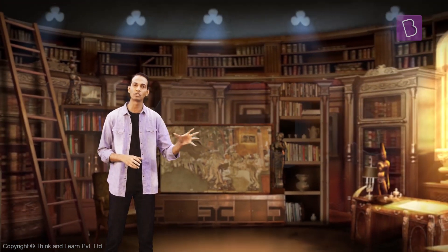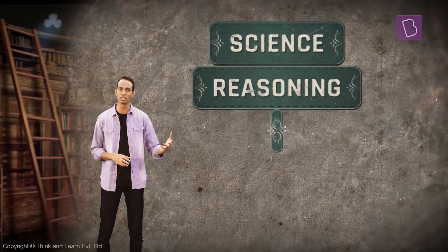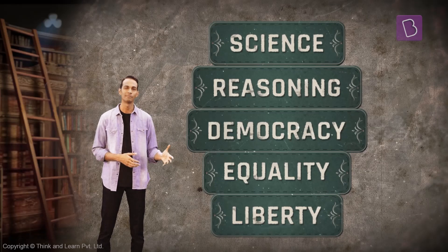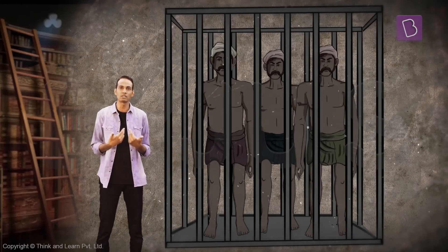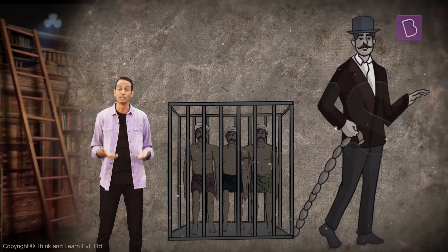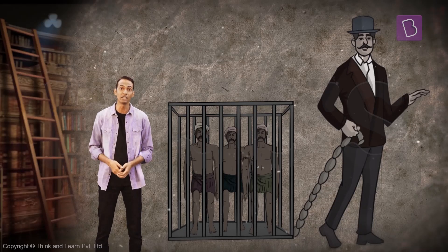The association of the modern period with the spread of the ideas of science and reasoning, democracy, equality, and liberty didn't mean a lot to us Indians. We were ruled by the British and we did not even have freedom. There was no equality, liberty, or democracy. Nor did this period bring any economic growth for us.